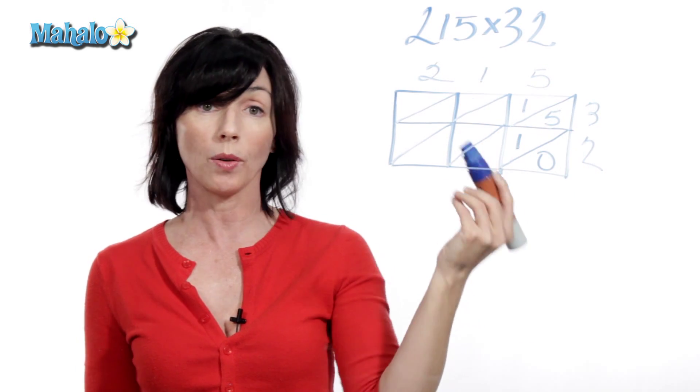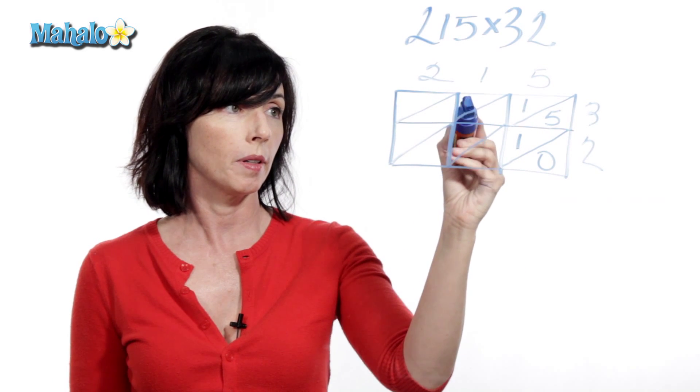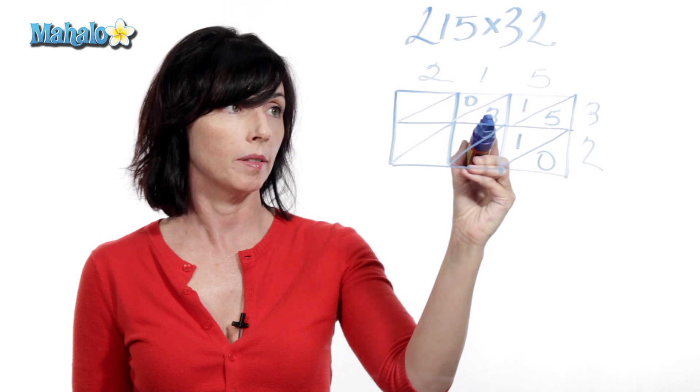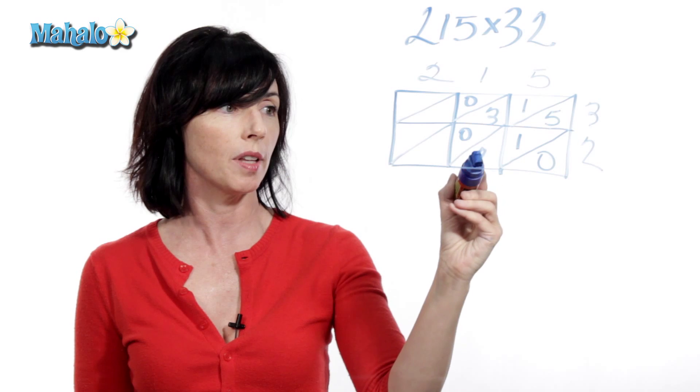1 times 3 is 3. I don't have anything in the tens position, so I'm going to put a placeholder, a 0. And I'm going to put my 3 down here. 1 times 2 is 2. So same thing. I put a 0 here and a 2 there.